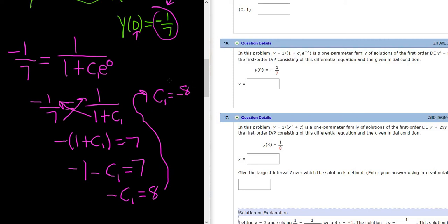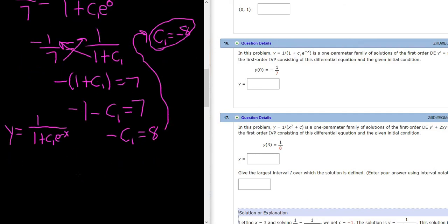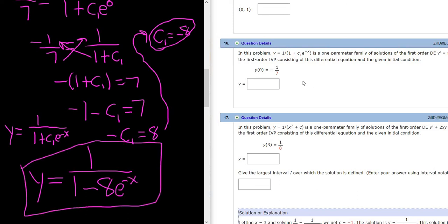Now all we have to do is plug this back into our one-parameter family: y equals 1 over (1 plus c1 e to the negative x). Plugging in c1 equals negative 8, we get y equals 1 over (1 minus 8 e to the negative x). This is a solution to the initial value problem.